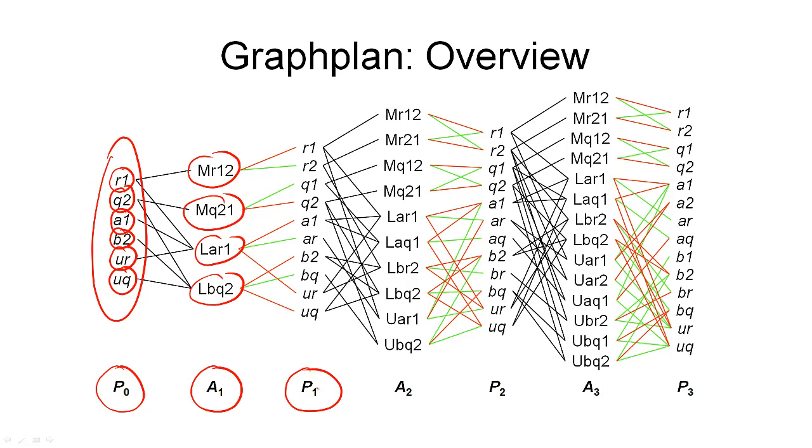And then, in the proposition layer P1 that we're adding in this expansion step, we have all the effects that were asserted by the actions in the preceding action layer plus all the propositions that were true already. So, this is the proposition layer P1 consisting of all the positive effects of these actions and all those elements that were already in P0. The edges you see here simply represent the preconditions and effects of the actions.